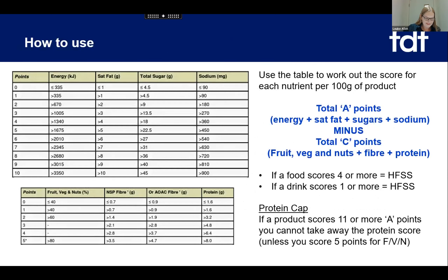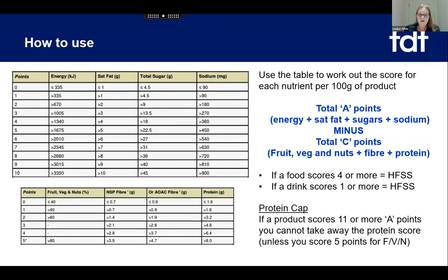So what is the model and how do you use it? The tables I've put on the left-hand side are directly from the government guidance. The model is a scoring system where you use the nutrient information per 100 grams of your product to determine a score for a range of components. You look at the nutrient information for your product per 100 grams, and work out the scores for energy, saturated fat, sugars, and sodium — the so-called A-nutrients.